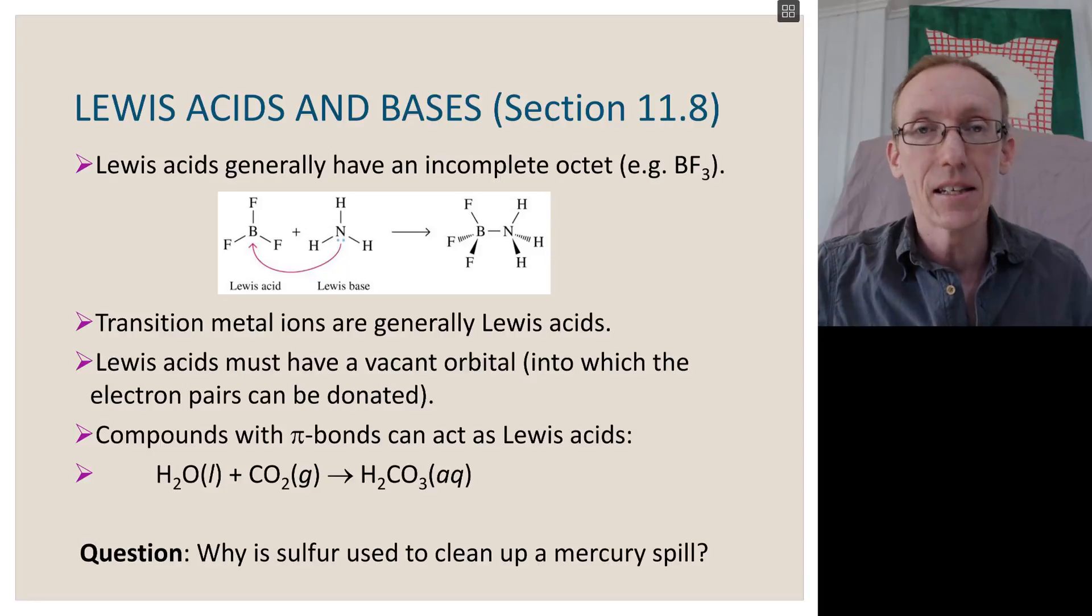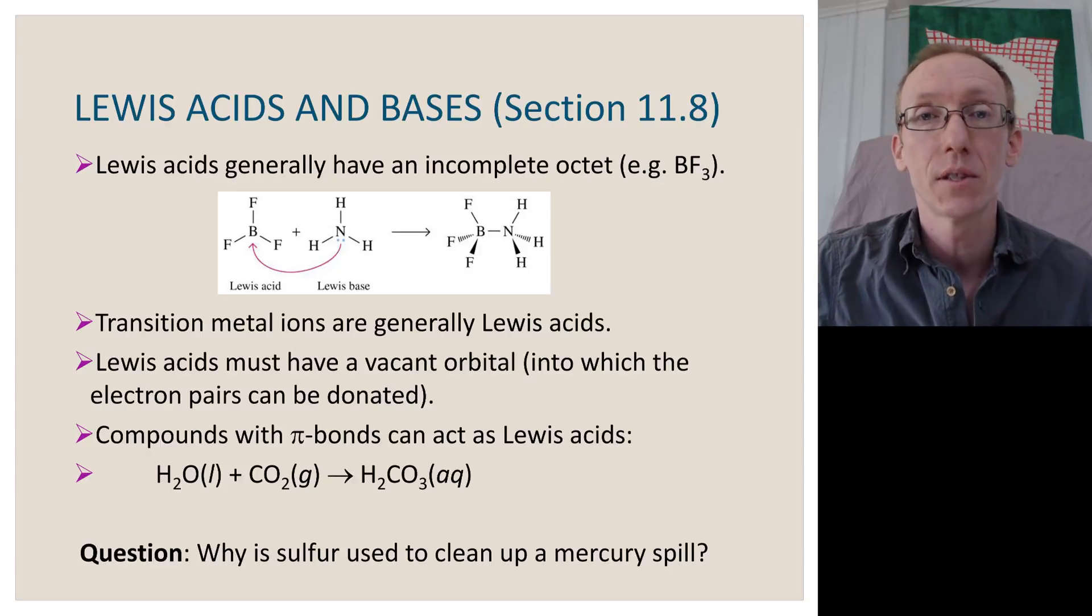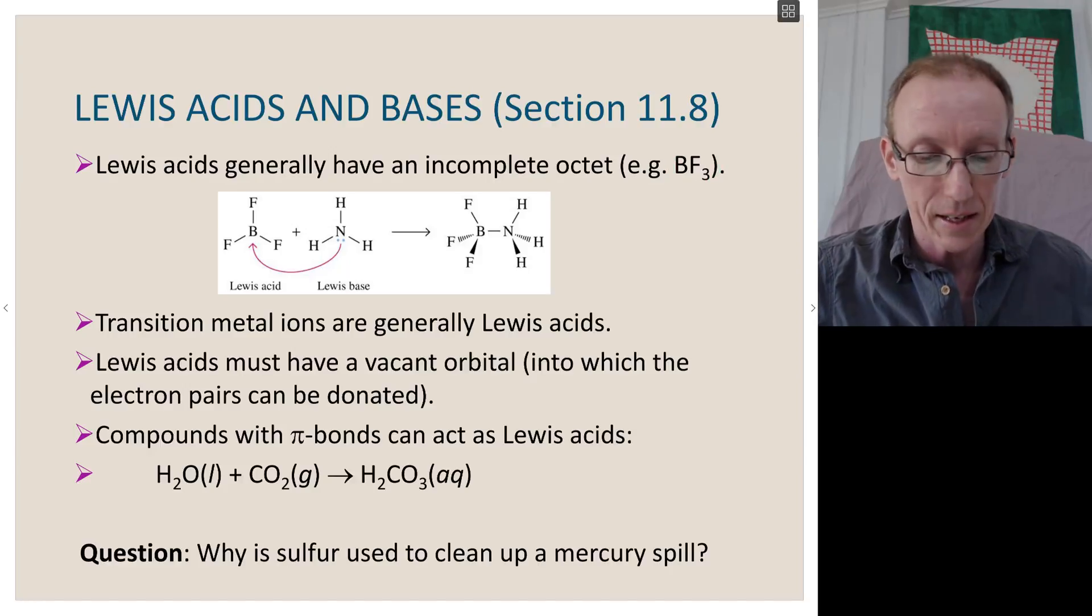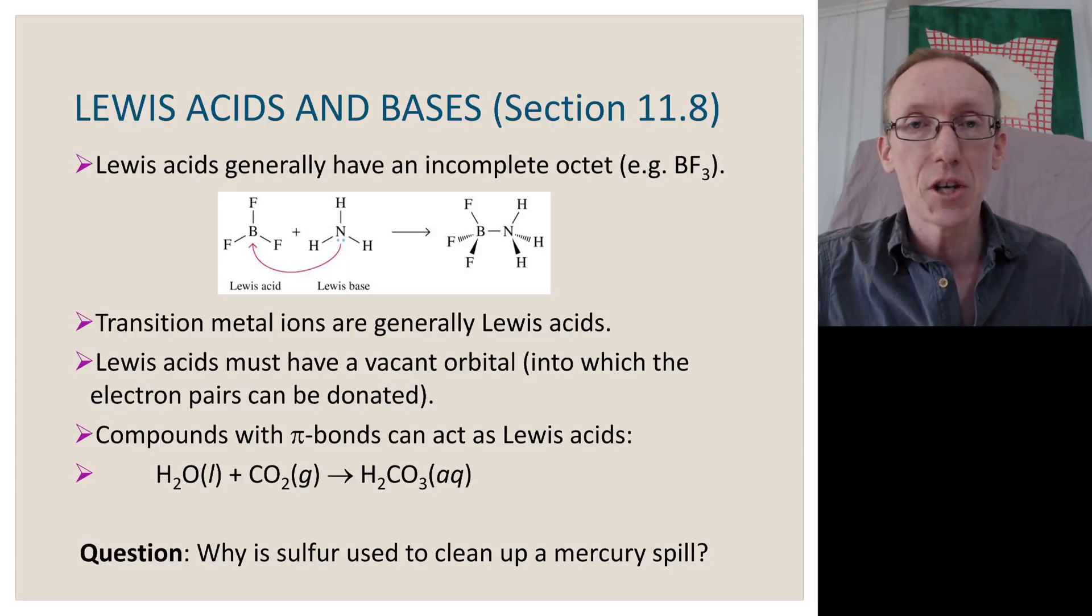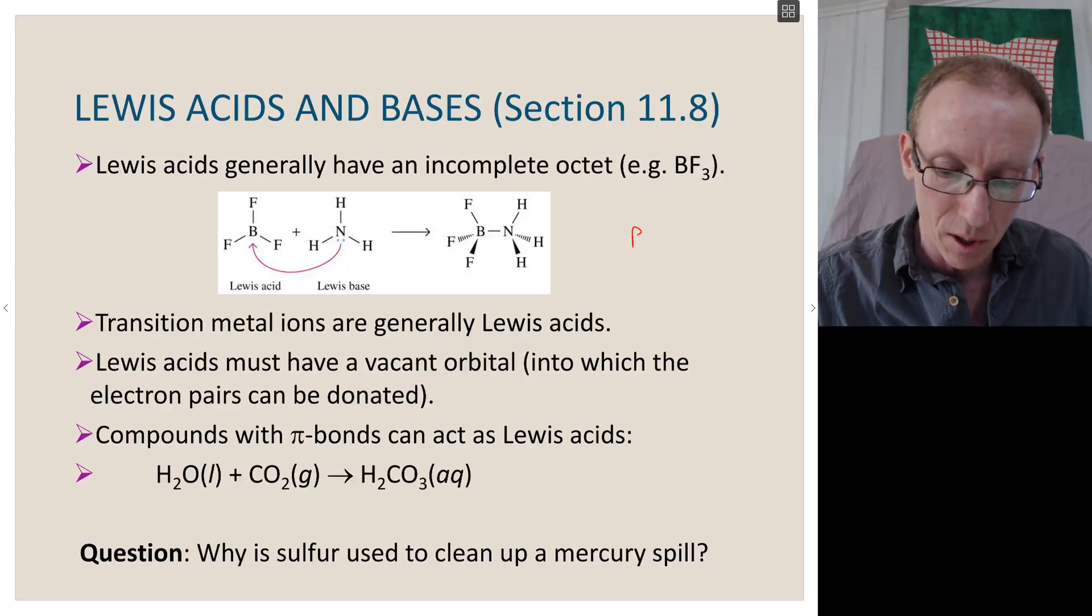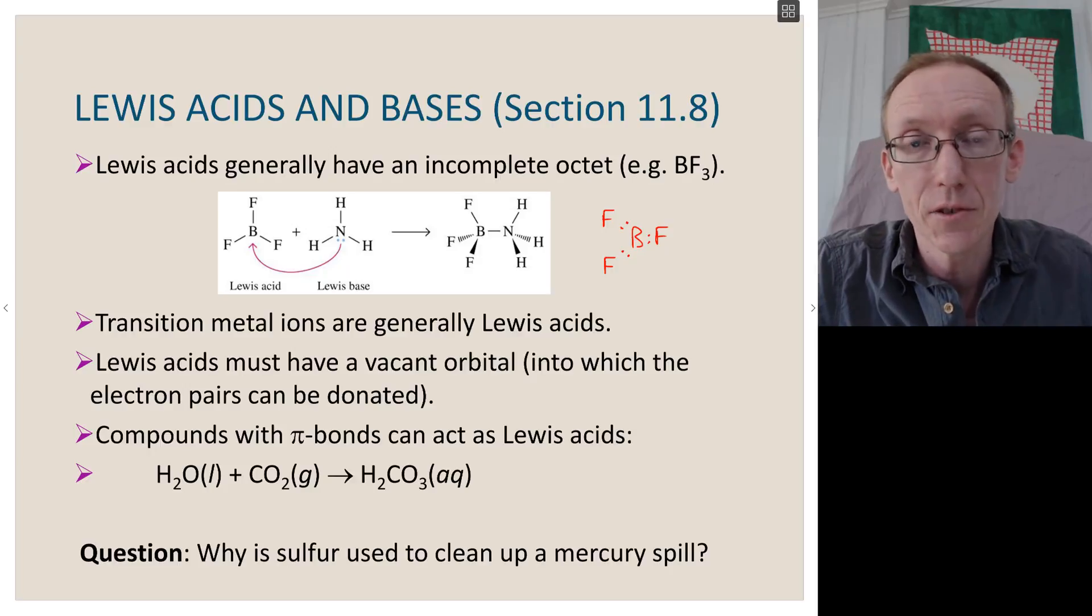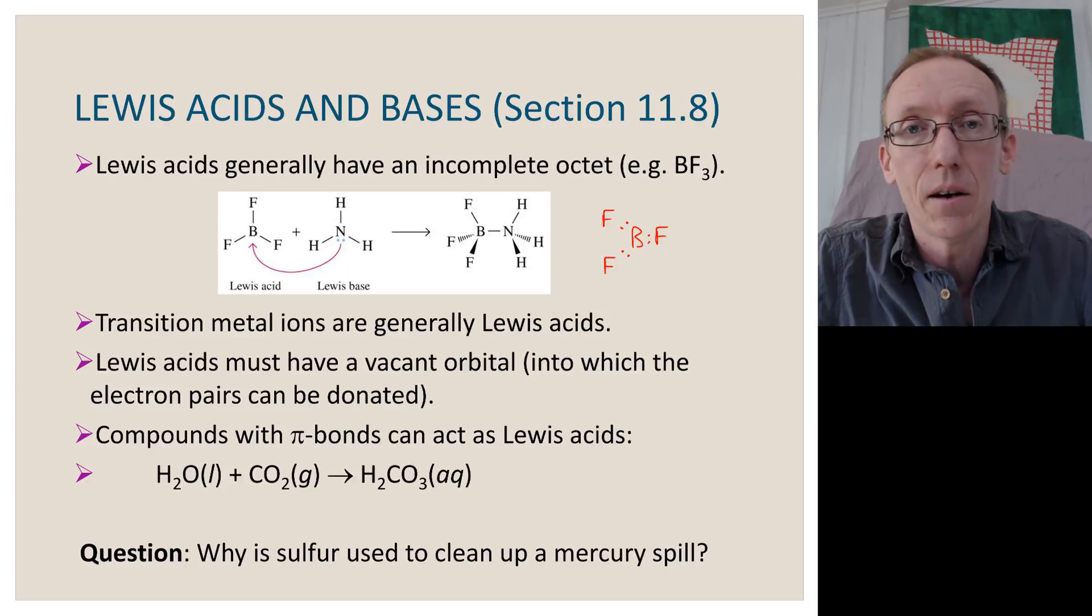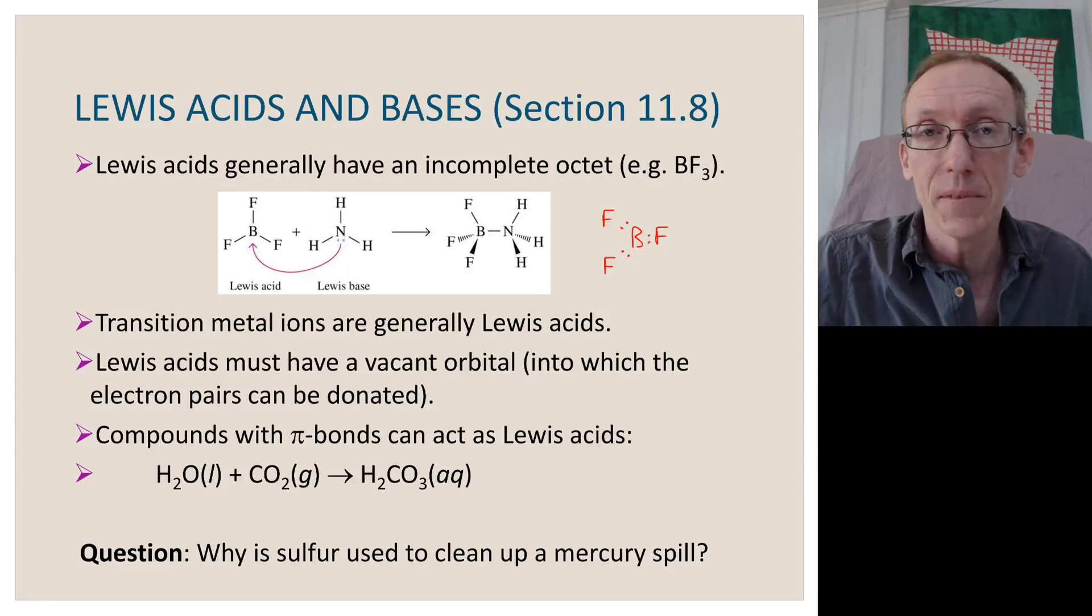So a Lewis acid generally has an incomplete octet. Remember our first row elements, we like to get to eight valence electrons to satisfy what we call the octet rule. So a good example of that is boron trifluoride, BF3. So boron trifluoride has a structure where the boron is sharing three pairs of electrons bonds with these fluorine atoms. And so if we drew out the structure of boron in this Lewis sense, we would have a structure that looks like this with three paired electrons in covalent bonds between the boron and the fluorines. And so therefore we've got six valence electrons and it doesn't satisfy the octet rule.